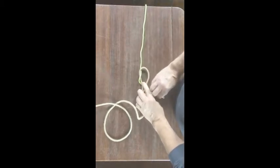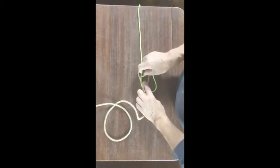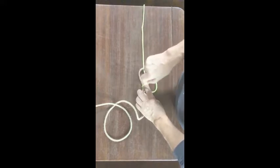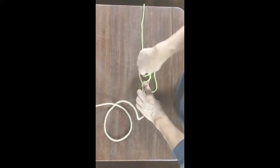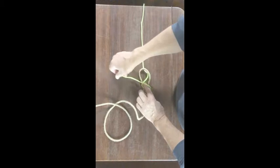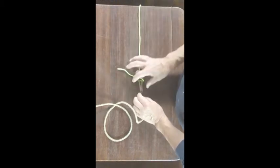And always take it over the working end of that rope, underneath both parts of the bite, like that underneath, and then just slip it under that loop. Don't go down, just slip it under, pull it down gently.